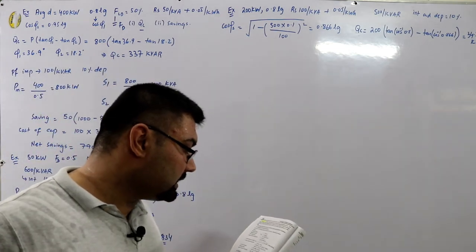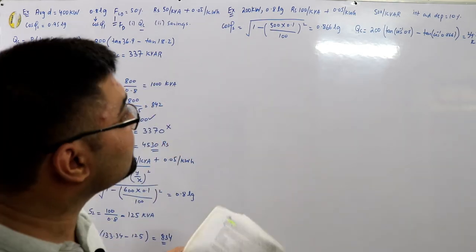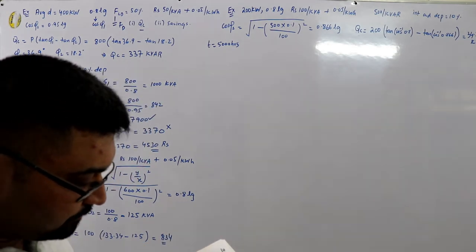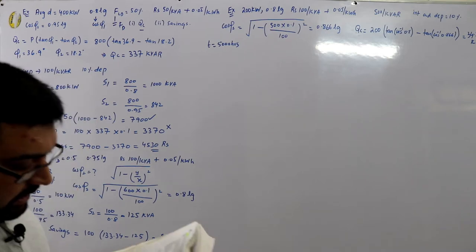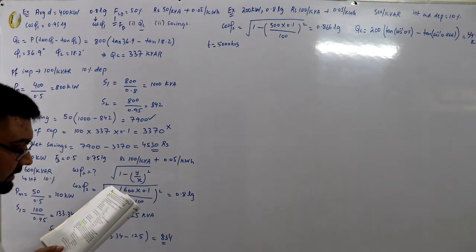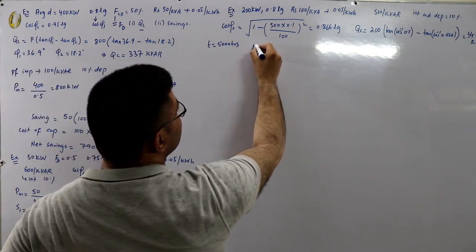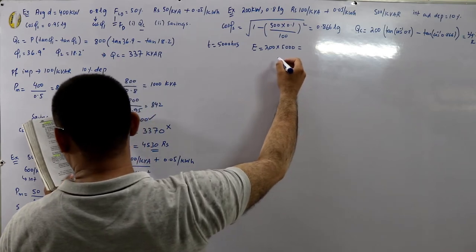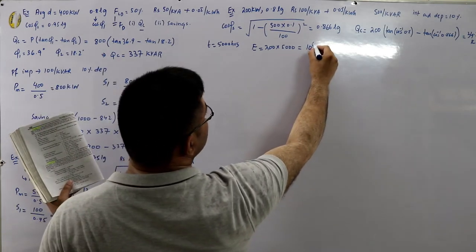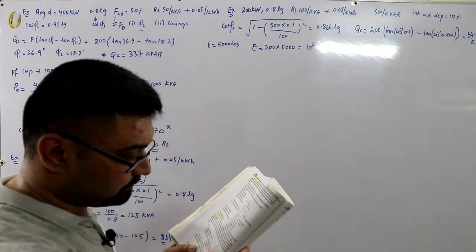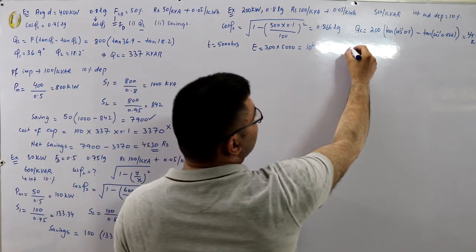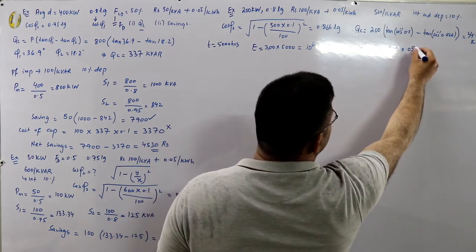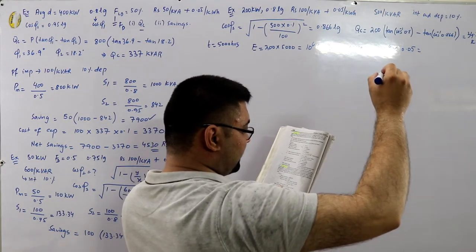The third part: find the new energy bill assuming the factory works 5000 hours per annum. Units consumed E = P × t = 200 × 5000 = 10⁶ kilowatt hours. Annual energy charges = 10⁶ × 0.05 rupees = 50,000 rupees.